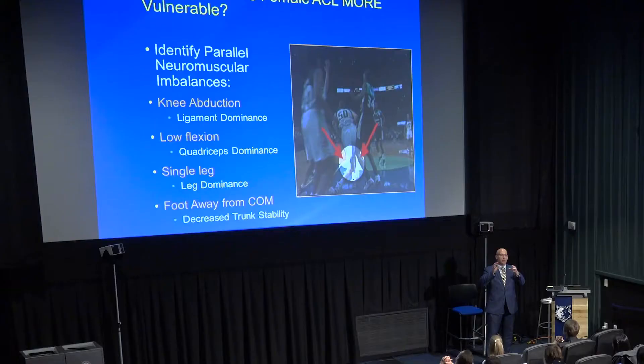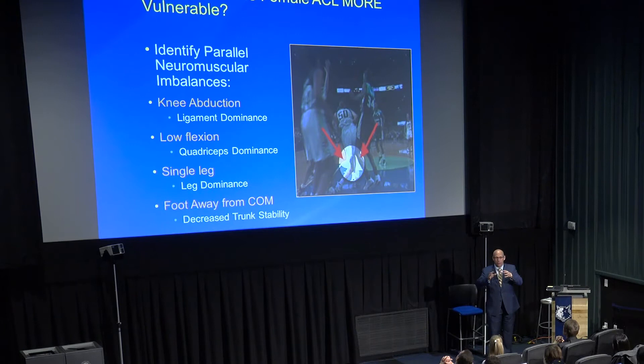The knee abduction part of the mechanism relates to what we call ligament dominance. Instead of muscle-dominant movement patterns — where you activate the posterior chain, especially the glute and hamstring, to pull the tibia back relative to the femur and decrease rotational moments — ligament-dominant individuals let force go to the joint and into the ligament. Ligaments are not designed to absorb force; muscles are. The low-flexion part of the mechanism relates to quadriceps dominance: activating the large quad muscle to stiffen the joint.